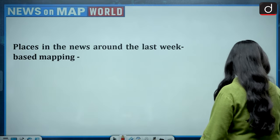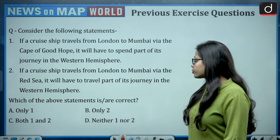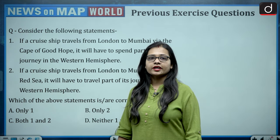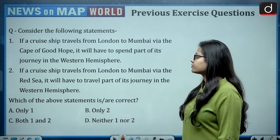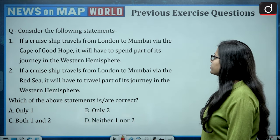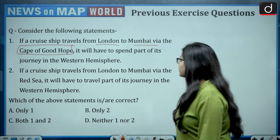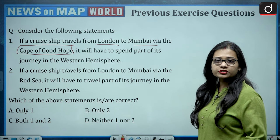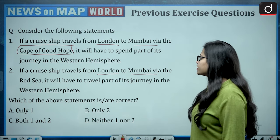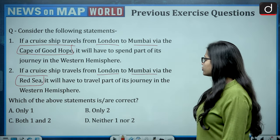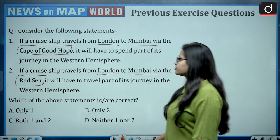Let's begin with the previous session question. Looking at the comment section, most of you answered either option C (both one and two) or option A (only one). The question says: consider the following statements. First statement: if a cruise ship travels from London to Mumbai via the Cape of Good Hope, it will have to spend part of its journey in the western hemisphere. Second: if a cruise ship travels from London to Mumbai via the Red Sea, it will have to travel parts of its journey in the western hemisphere.